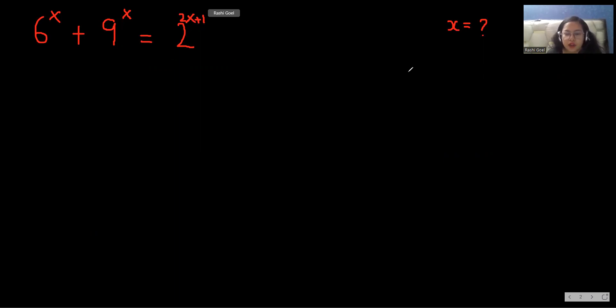As we know the rule that x^m multiply x^n, we can write it as x^(m+n). So we can break our 2^(2x+1) into 2 multiplication bases. Like 2^(2x) multiply 2^1.